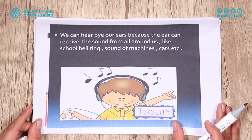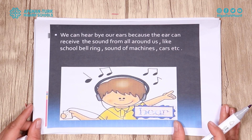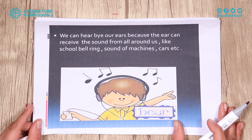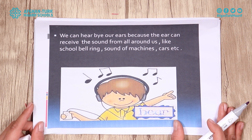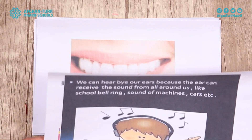We can hear by our ears because the ear can receive sound from all around us. We can hear different sounds with our ears, like the school bell ringing, sounds of machines, cars, etc.